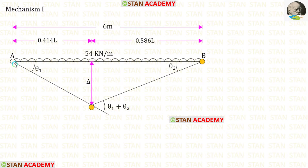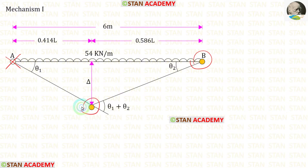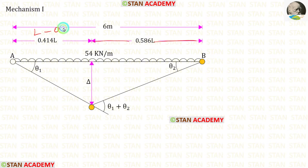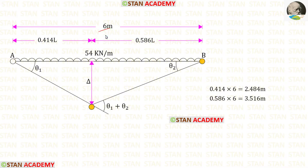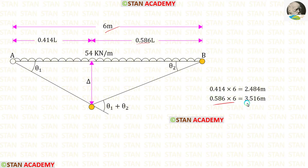In this span, at one end we do not have a plastic hinge and at the other end we have a plastic hinge, so we have to consider this span as a propped cantilever beam. For a propped cantilever beam with UDL acting over the full span, the plastic hinge under the load occurs at 0.414L from the fixed end, or L minus 0.414L equals 0.586L from the free end. With L equal to 6 meters, we get 0.414 × 6 = 2.484 m and 0.586 × 6 = 3.516 m.